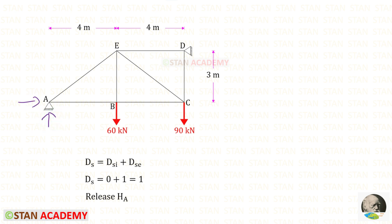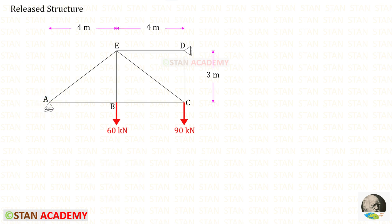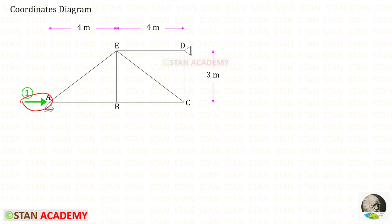At point A there will be 2 reactions and at point D also 2 reactions. Out of these 4, we have to remove any one of them. I am going to remove the horizontal reaction from point A, that is HA. When we remove HA, the hinged support at A becomes a roller support with only a vertical reaction. This structure is called the released structure. In this analysis there is only one coordinate, HA, which we have released. Let us assume HA is acting towards the right side; if we get a negative value, our assumption is incorrect and we can change the direction.